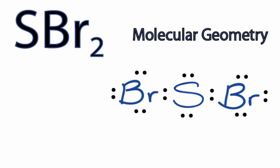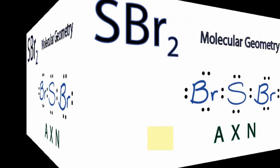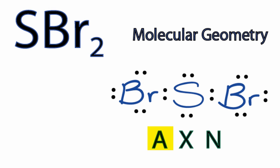Let's take a look at the AXN notation to figure out the molecular geometry for SBr2. A, that's the central sulfur. X, that's the number of atoms bonded to the central sulfur. We have two bromines.